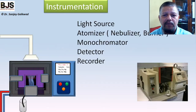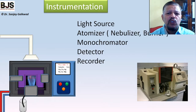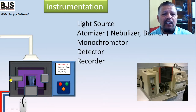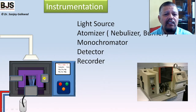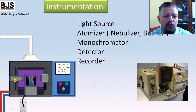The instrumental parts of AAS are: first, a light source; then an atomizer containing the nebulizer and burner; after that a monochromator; and finally a detector and recorder system.